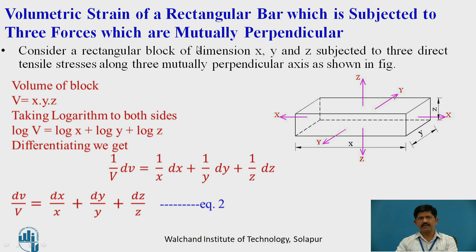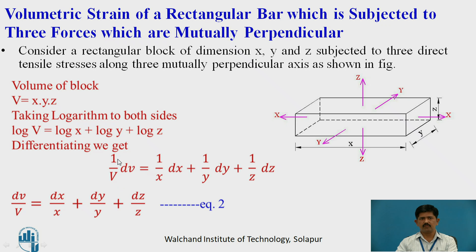Now we will see the volumetric strain of a rectangular bar when it is subjected to three forces which are mutually perpendicular. Considering length as x, breadth as y, depth as z, and forces in the directions of x, y, and z, the volume of the block is x·y·z. Taking logarithm on both sides, log V equals log x plus log y plus log z. Differentiating, we get (1/V)·dV equals (1/x)·dx plus (1/y)·dy plus (1/z)·dz, so dV/V equals dx/x plus dy/y plus dz/z. This is equation number 2.